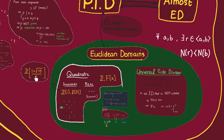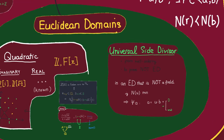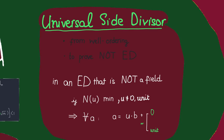We can take any imaginary quadratic PID not on that list. How do we know these are PIDs? By computing the class number using Minkowski's bound — that's covered in the review about class numbers. However, we've only proved these are not Euclidean with respect to a specific norm. What if they are Euclidean with respect to other norms? There is another method: if a domain is Euclidean, it must have a universal side divisor.